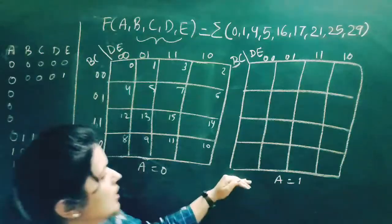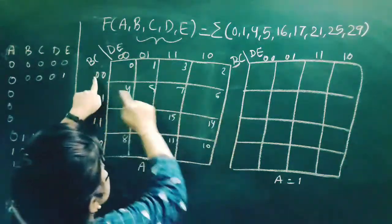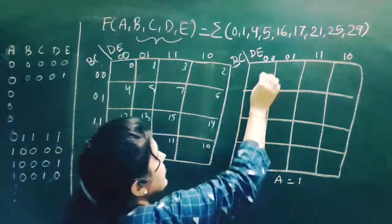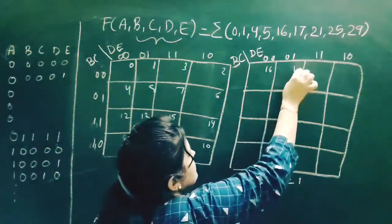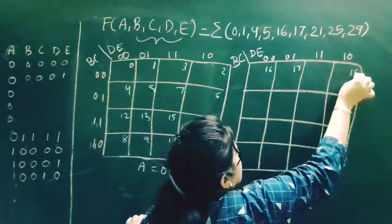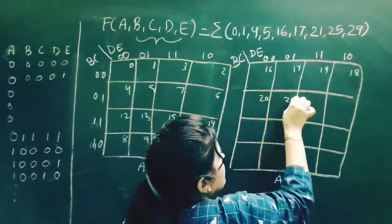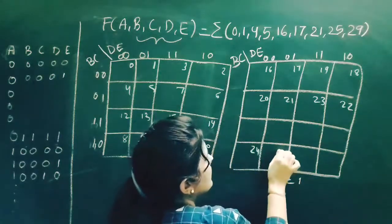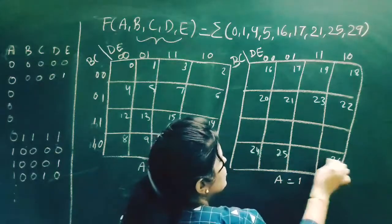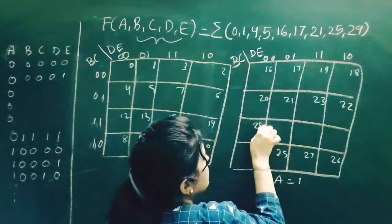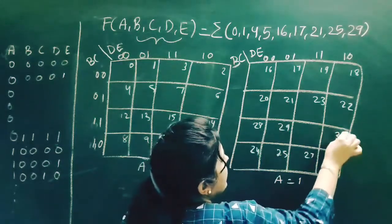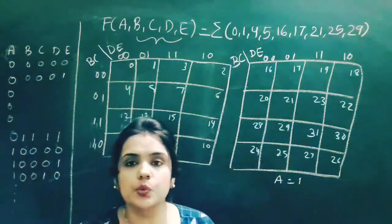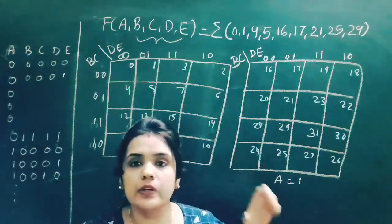In the second K-map where a=1, starting with 1,0,0,0,0 equals 16, we fill in: 16, 17, 18, 19, 20, 21, 22, 23, 24, 25, 26, 27, 28, 29, 30, and finally 31. These are the total 32 minterms from 0 to 31 that can be filled into these two K-maps.